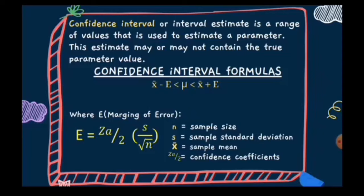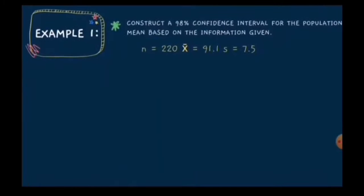We're going to have some examples. For example number one: construct a 98% confidence interval for the population mean based on the given information. We have a sample size of 220, a sample mean of 91.1, and a standard deviation of 7.5. First, solve for the margin of error.